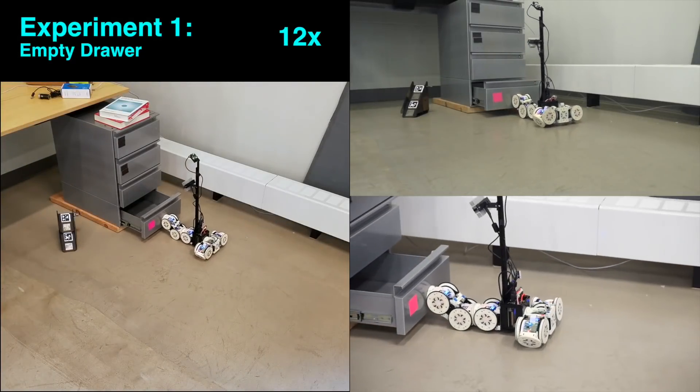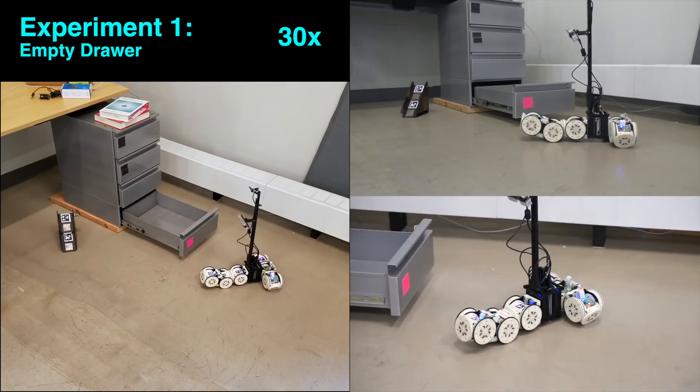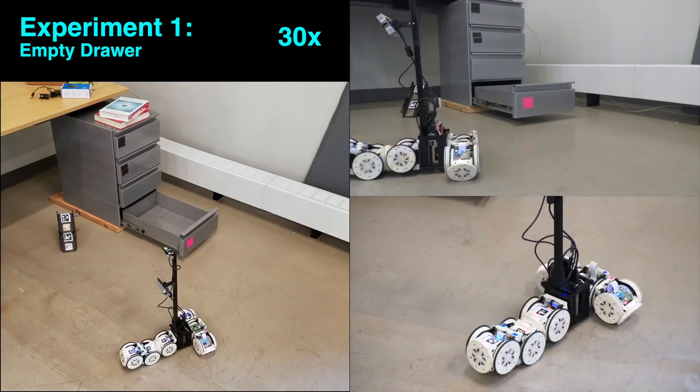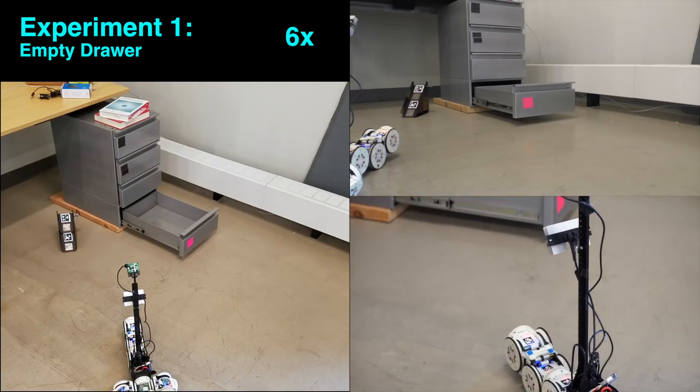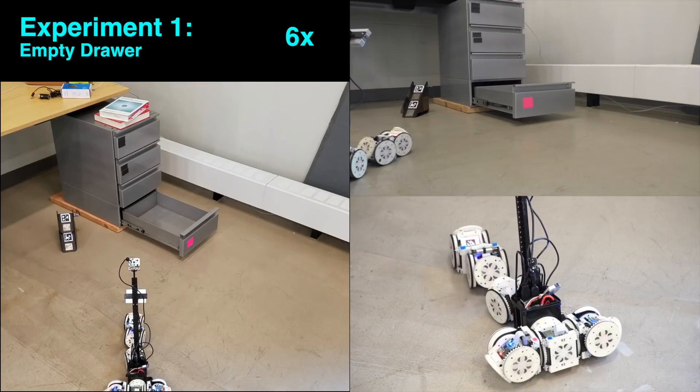In a second version of the experiment, the bottom drawer is empty. When the robot observes the drawer, it no longer classifies it as a ledge that can be climbed. This makes it impossible for the robot to complete its mission, whether or not a ramp is available. To indicate that its mission is impossible, the robot disassembles itself.